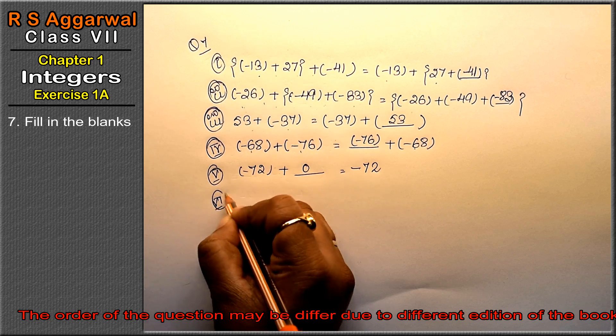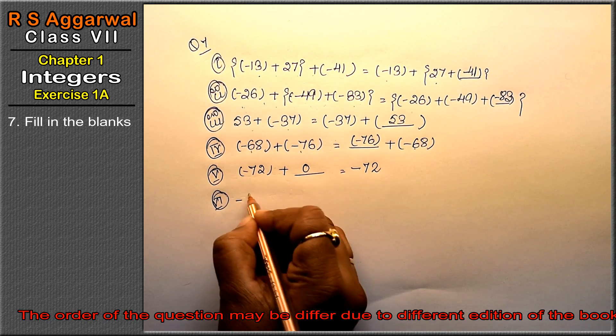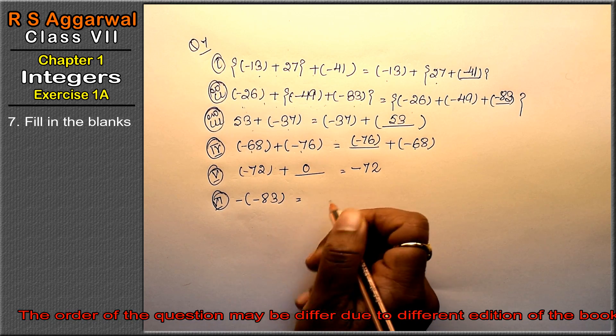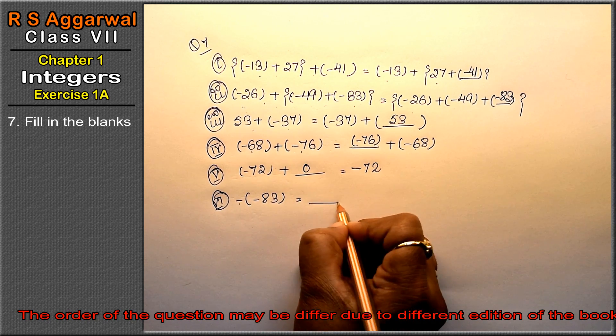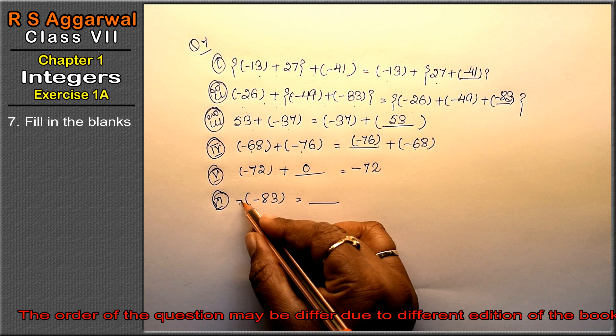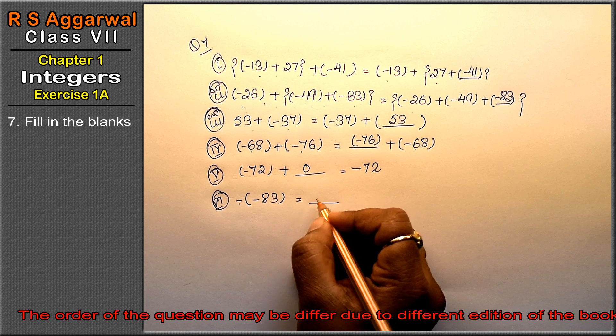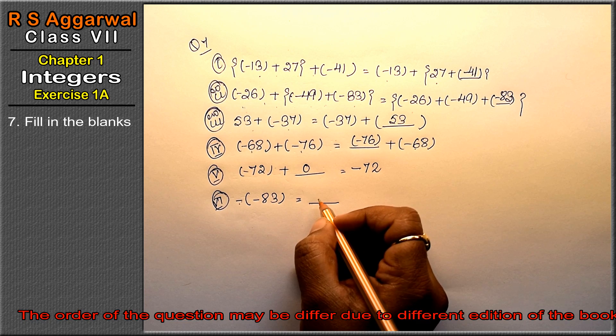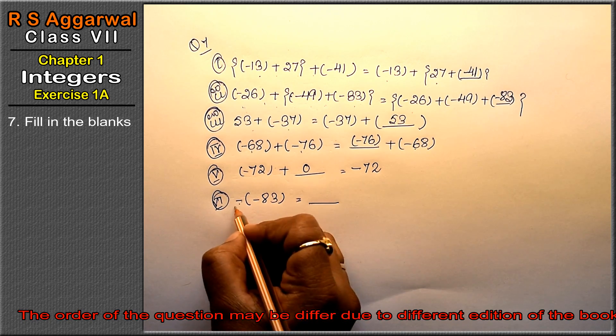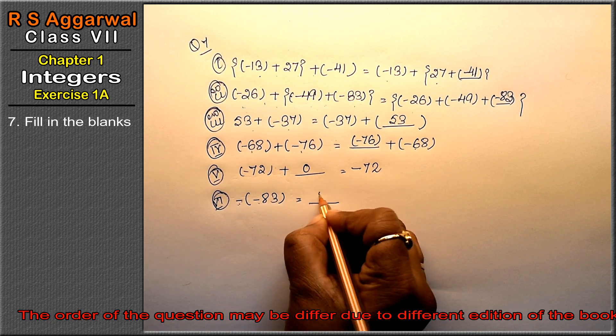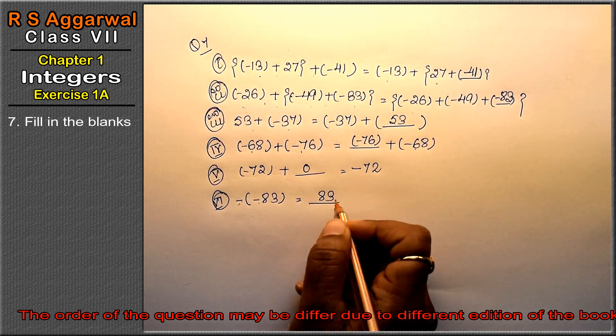Sixth part: minus 83 plus dash equals zero. This is the additive inverse property. When we add any number with its inverse, it becomes zero. If we add minus 83 with the minus of minus 83, then it will be plus, that is 83.